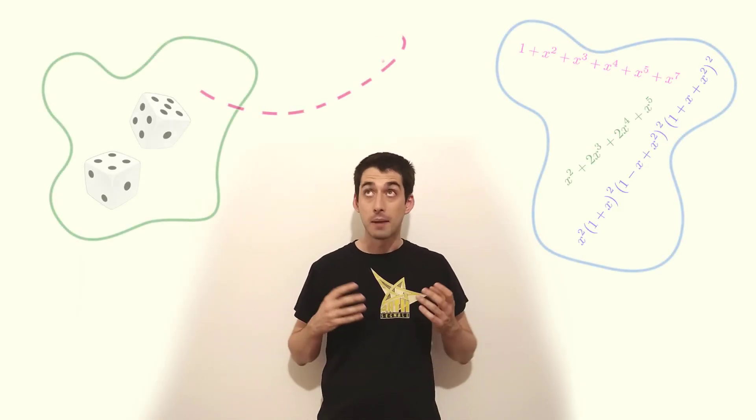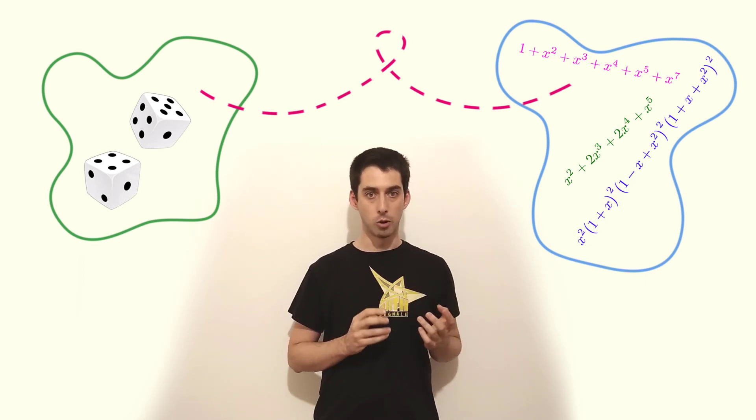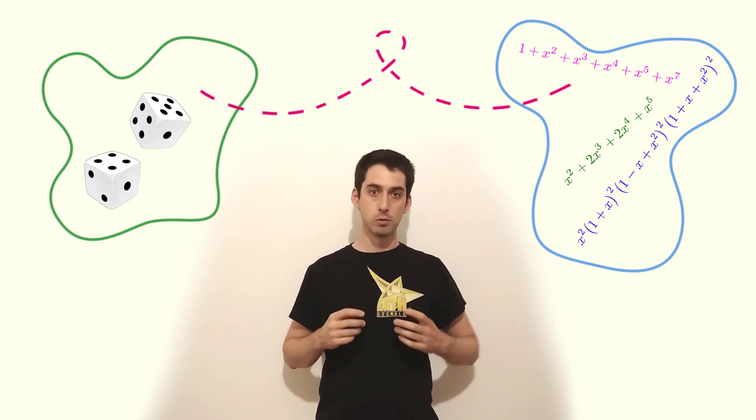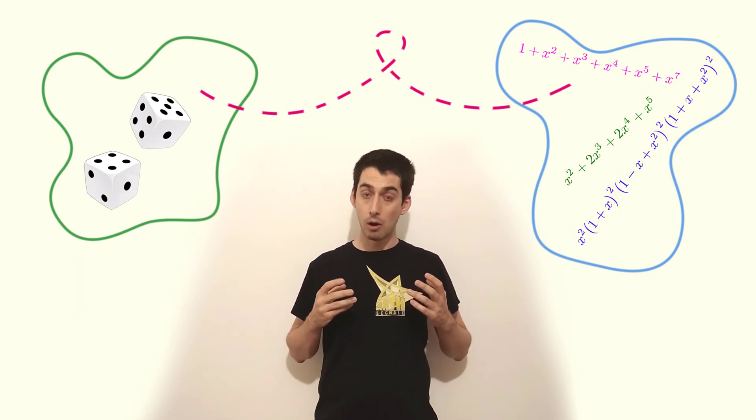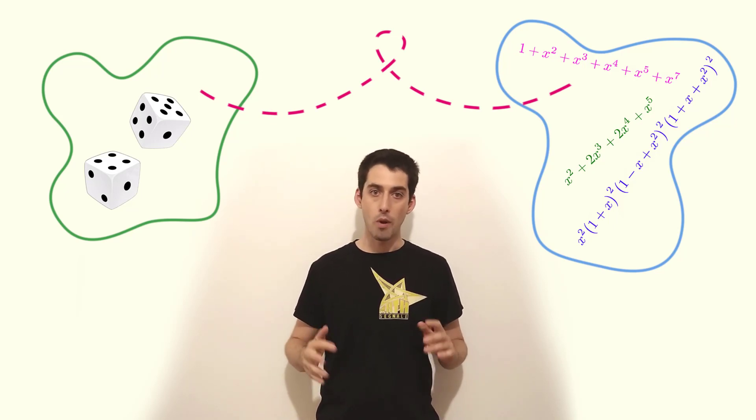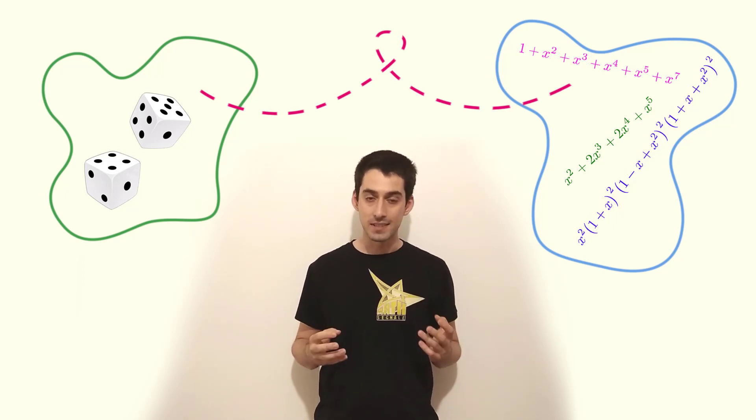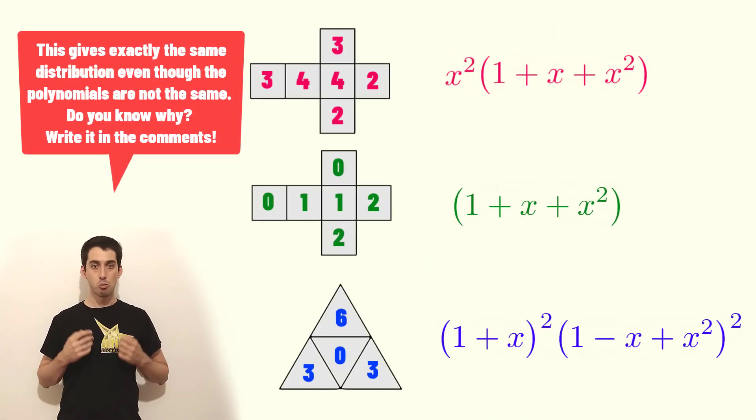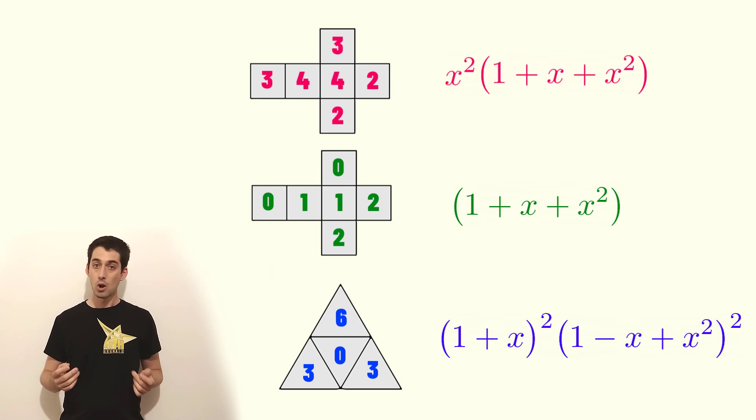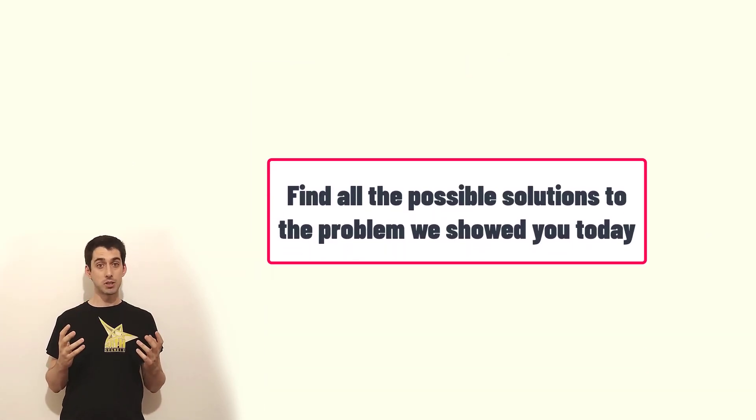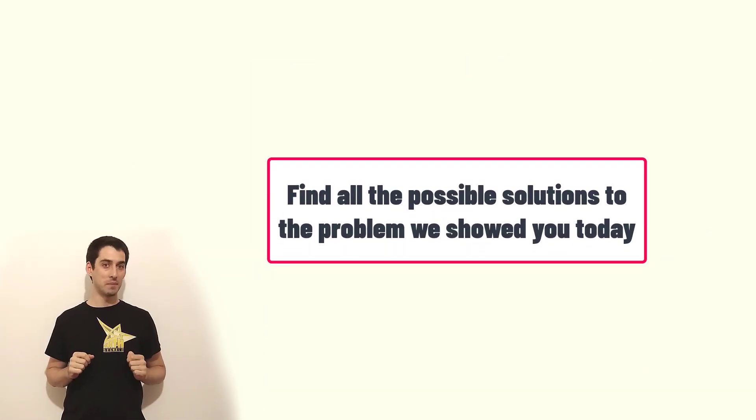We not only have a solution but thanks to this amazing bridge between dice and polynomials we have a very powerful tool which allows us to find all the possible solutions with as many dice as we want and as many faces as we want. For instance this is a solution with three dice. We challenge you to find all the possible ones and let us know in the comments what you find.